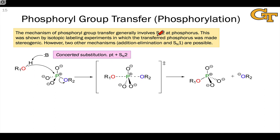And experiments have shown that generally, the mechanism of phosphorylation involves SN2 at the phosphorus atom. This was shown by making the phosphorus stereogenic, using different isotopes of oxygen to make the phosphorus a stereocenter, and observing inversion of configuration at that phosphorus through a concerted substitution mechanism.